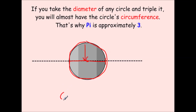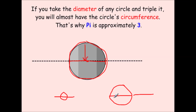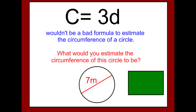You could do this with a penny — take the diameter of a penny and triple it, and it would almost wrap around perfectly. Or an above-ground swimming pool: find the diameter, triple it, and it would almost perfectly wrap around. For hundreds of years, this was the formula used for finding circumference — just triple the diameter. It's not exactly accurate, but it's really good for estimating.